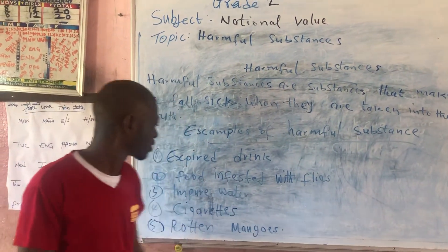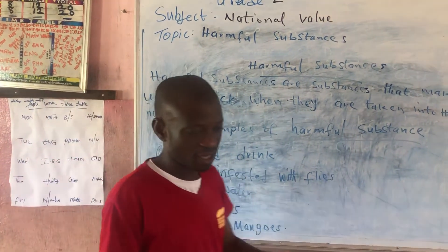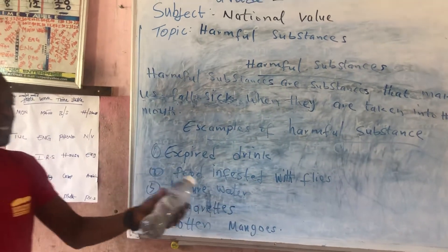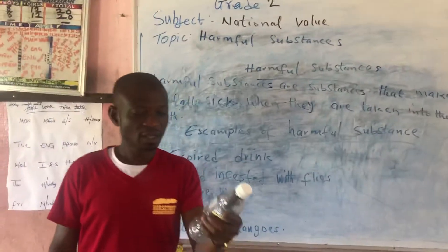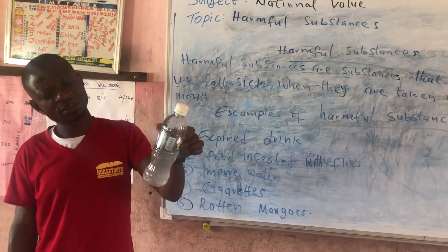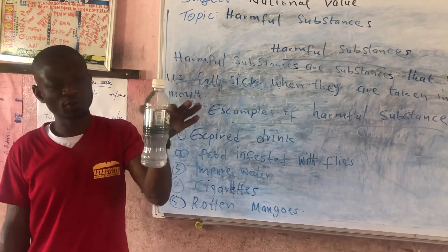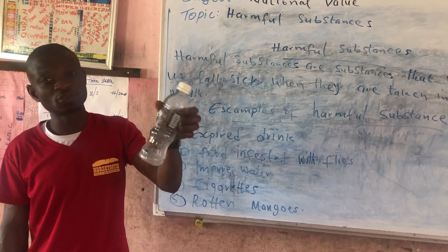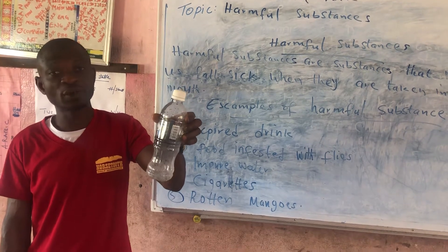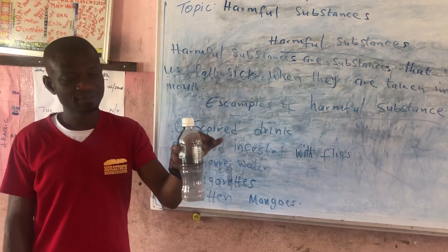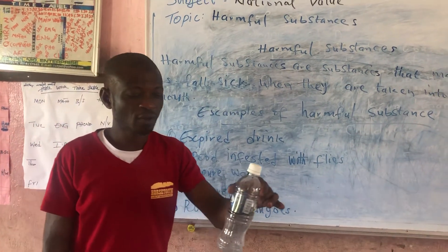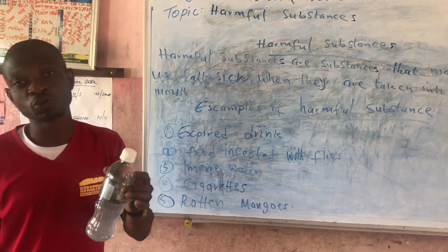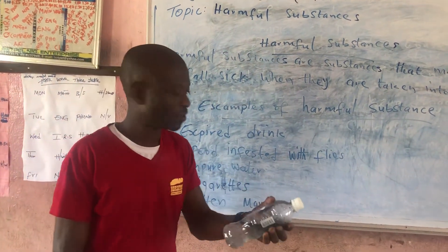The first example of a harmful substance is expired drinks. If you look at this can here, you can see the drink has particles on it. These particles signify that this drink has already expired and is no longer safe for use. If you take it, you will be infected and it will cause stomach ache, so you should be aware.